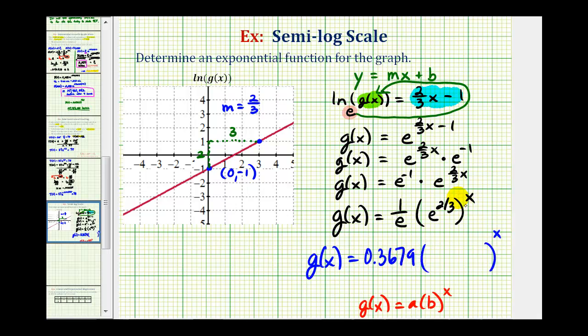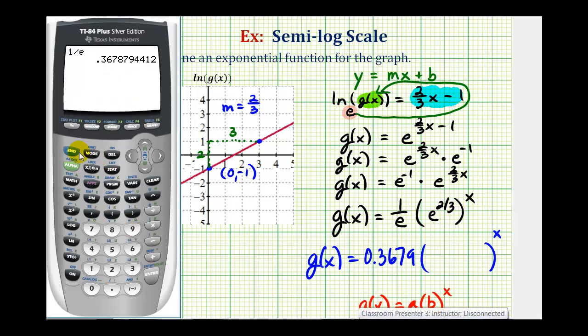Now we'll get our decimal approximation for e^(2/3), which is approximately 1.9477.